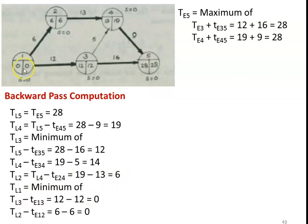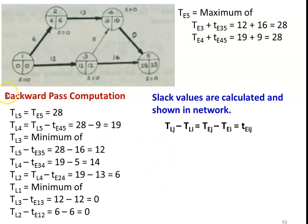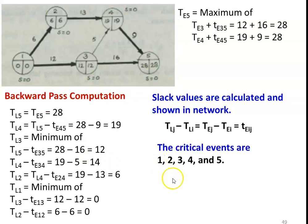TL1: with two outgoing arrows, TL1 = minimum of (TL3 - t(1,3)) = 12 - 12 = 0, and (TL2 - t(1,2)) = 6 - 6 = 0. Both are 0. Now we calculate the slack values, which are the difference between TL and TE: event 1: 0-0=0, event 2: 6-6=0, event 3: 12-12=0, event 4: 19-19=0, event 5: 28-28=0. For all events the slack value is 0, so all events are critical events: 1, 2, 3, 4, 5.